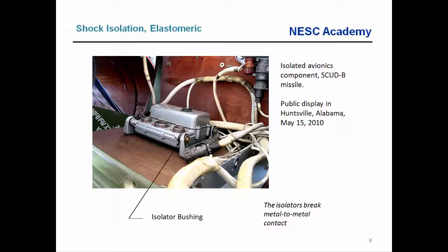One sensible approach to mitigate the effects of shock is to take the avionics component and mount it via isolators. This image shows a Scud B missile on public display in Huntsville, Alabama, with black grommets or isolator bushings made of some rubber, thermoplastic, or elastomeric material. These break the metal-to-metal contact between the box and its mounting bracket. Some call them dampers — and they do provide damping, which is beneficial — but the even more important effect is that they act like a soft spring to lower the natural frequency of the component.